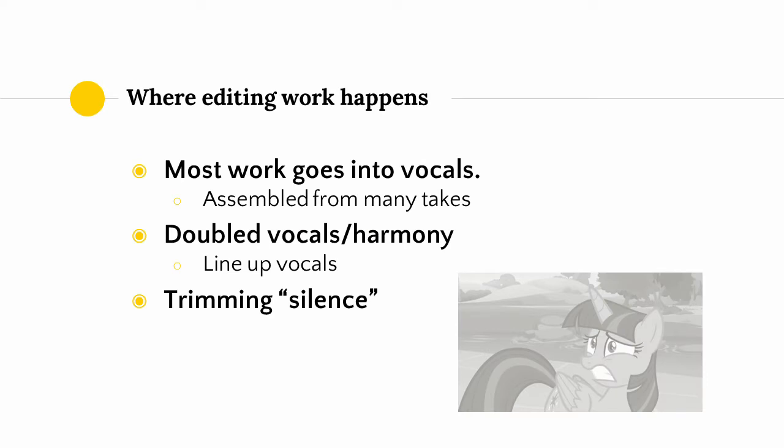In terms of my own work, most of my editing work goes into vocal tracks. Most of my vocal tracks are assembled from many different takes, taking advantage of the ability to move, split, and delete clips to get rid of mistakes and adjust timing. When I do doubled vocal tracks or harmony tracks, I do my best to try to edit them to line up as closely as possible. Lastly, on vocal and guitar tracks, you can trim the silence — the parts where they're not supposed to be playing or singing — in order to reduce unnecessary noises in your production. And that's editing.